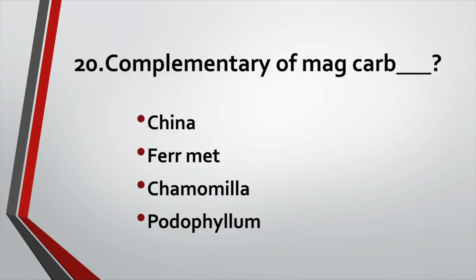Complementary of Mag carb: Option A: China. Option B: Ferrum met. Option C: Chamomilla. Option D: Podophyllum. Answer: Option C, Chamomilla.